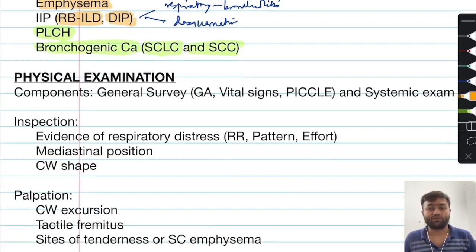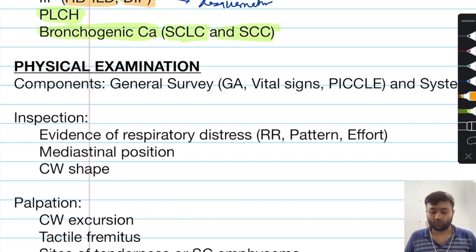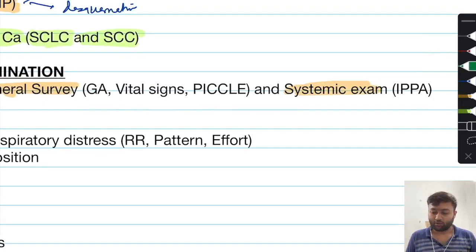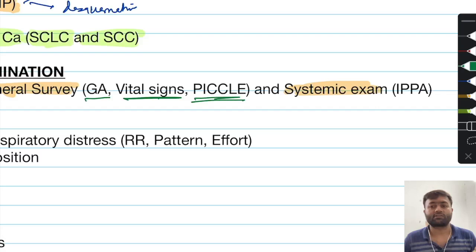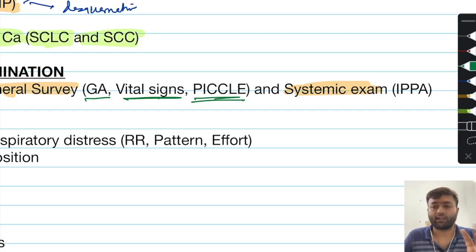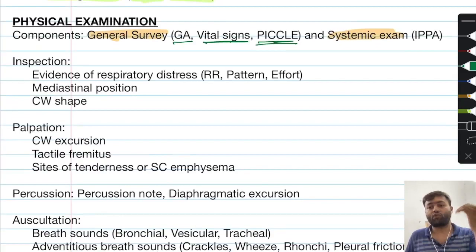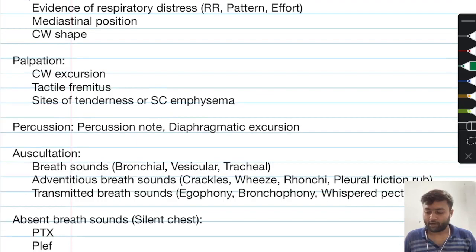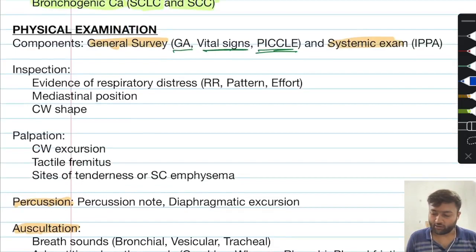After history, we move on to physical examination, where the general sequence is always followed. The general survey includes components of general appearance, vital signs, pallor, icterus, cyanosis, clubbing, lymphadenopathy, and edema. On systemic examination of the respiratory system, it follows a specific order: inspection, palpation, percussion, and then auscultation. The most important parts of the examination in respiratory diseases are percussion and auscultation, along with inspection for evidence of respiratory distress.